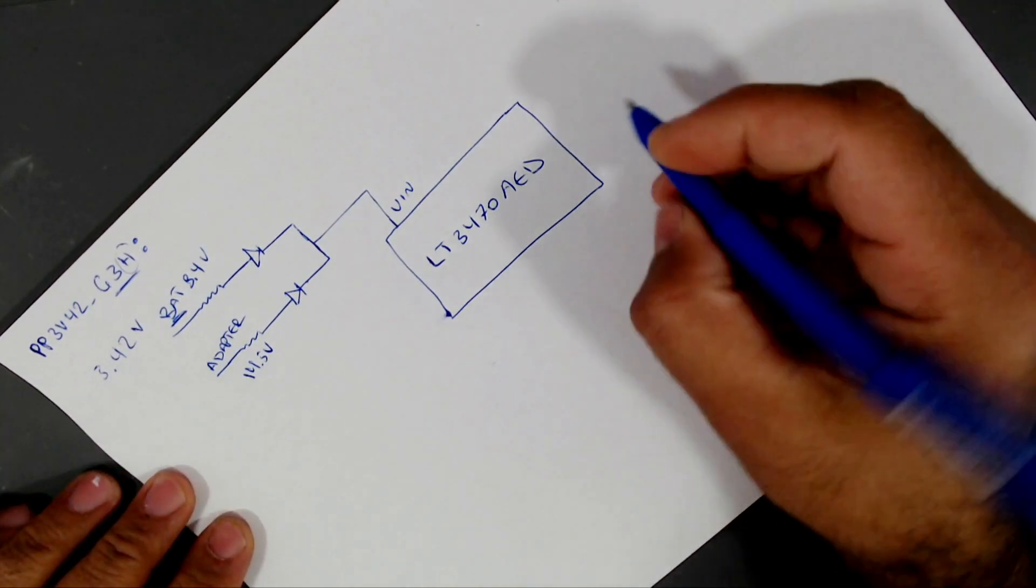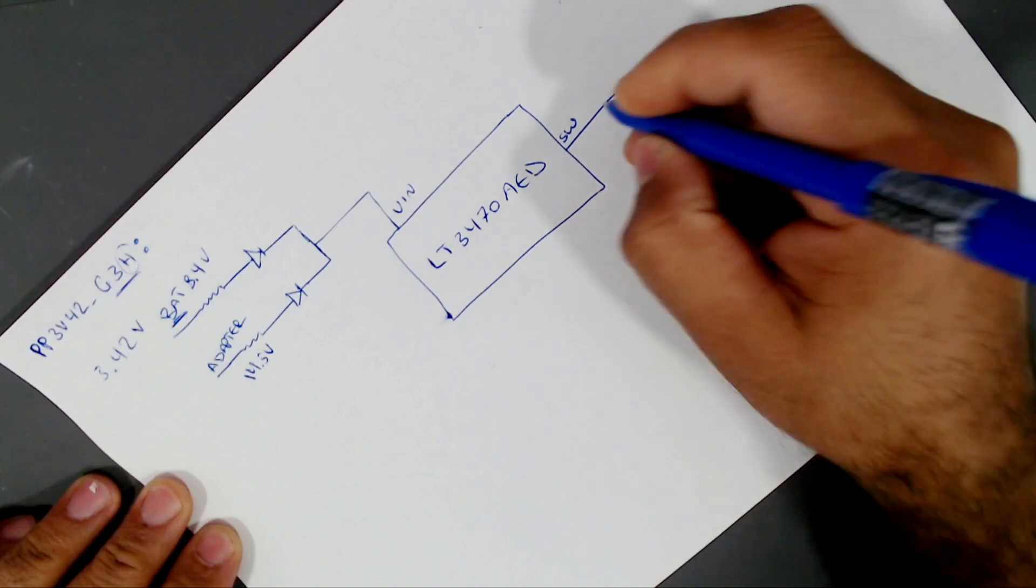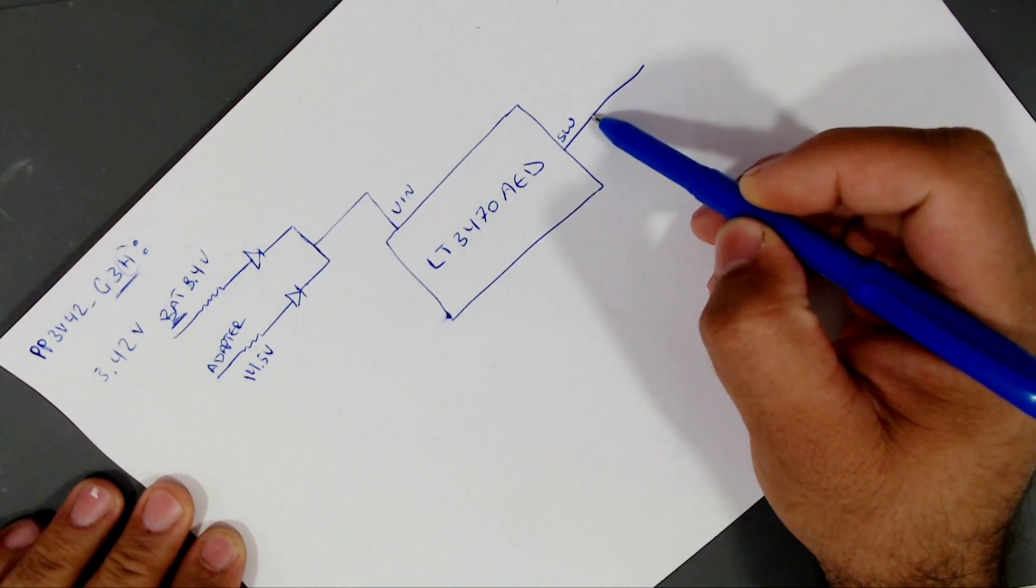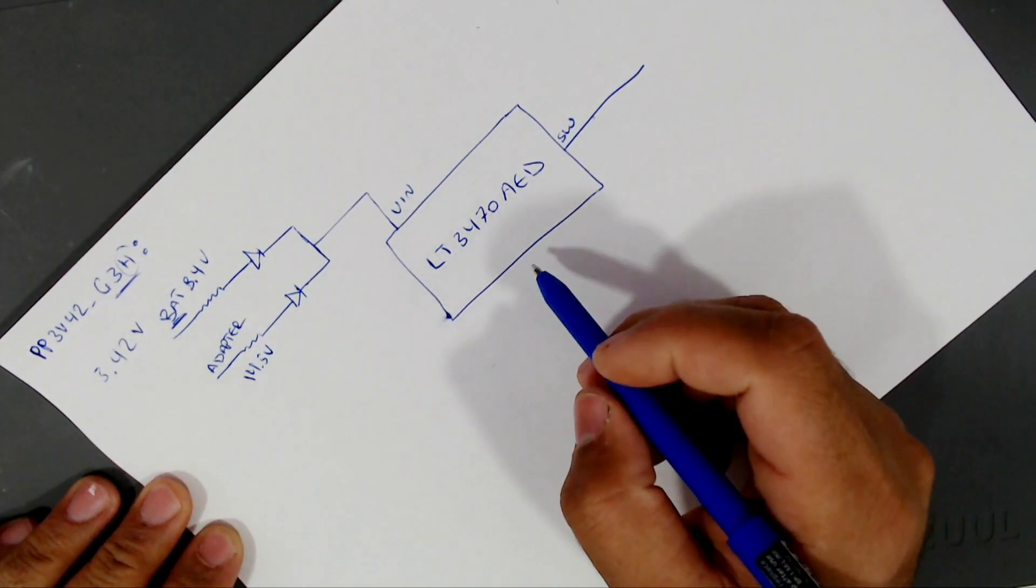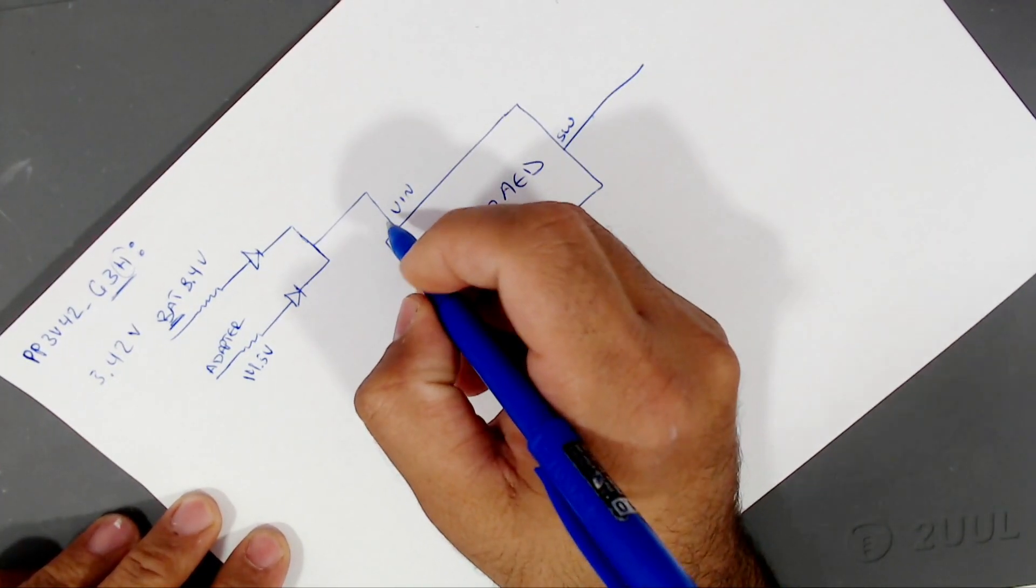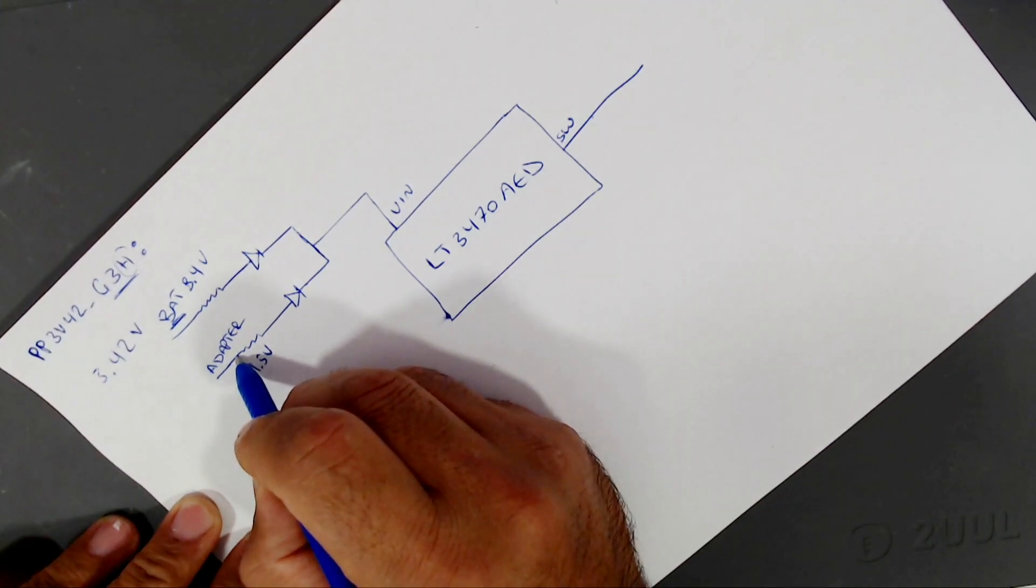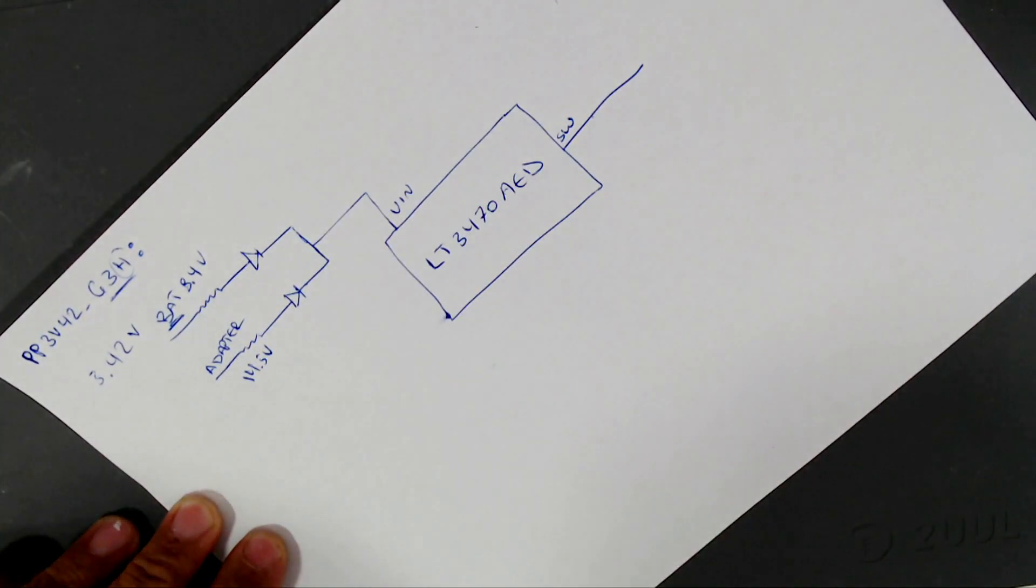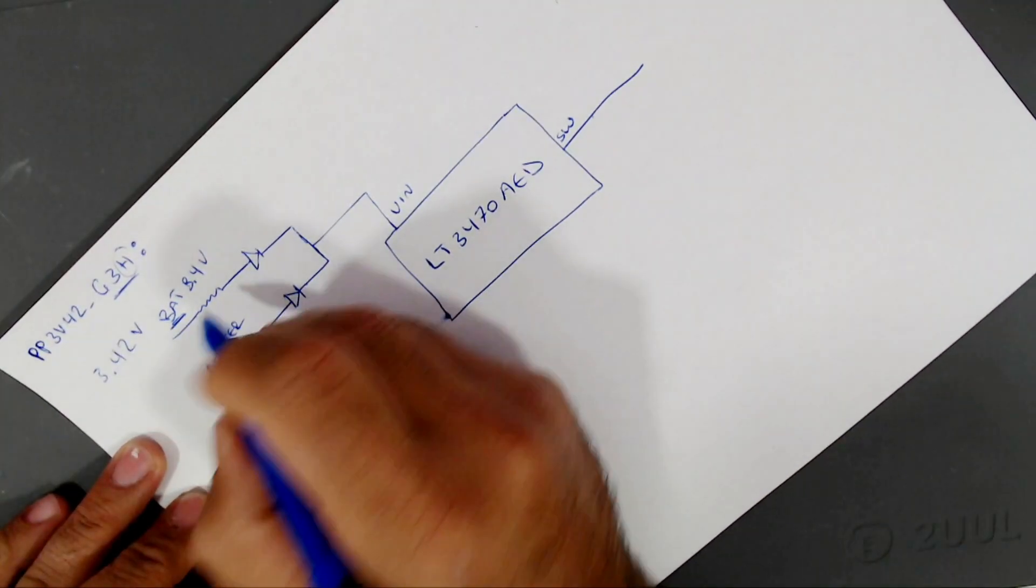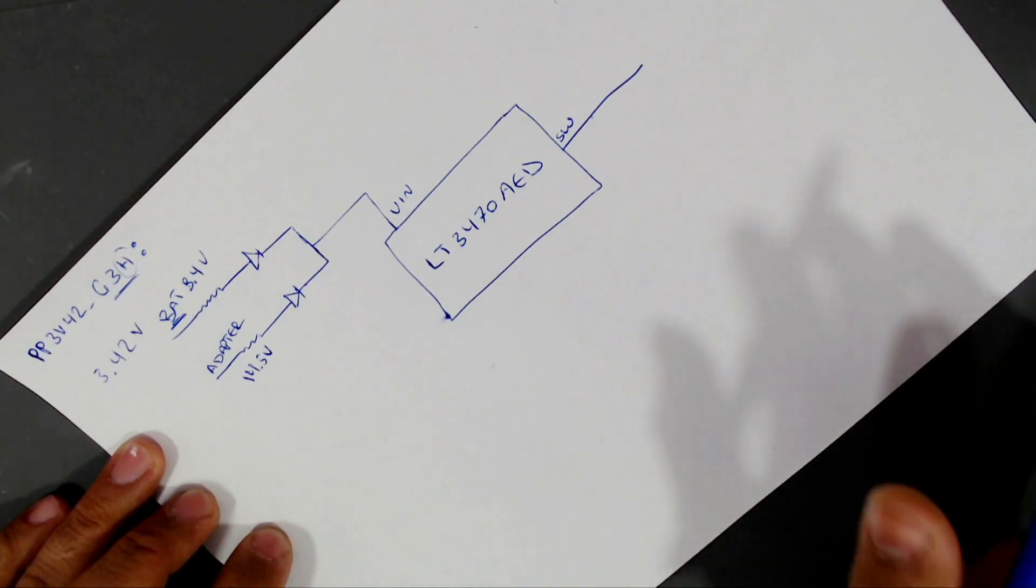So if you are missing the 3.42V voltage, this pin is called switched and the output is coming from this pin. If you are missing the 3.42V volts at the switch pin of this regulator, then you must check the VIN pin first. Do you have voltage here? If not, then go back and check before these two resistors. If you have the adapter connected, you must have voltage before and after this resistor. If you have voltage before but not after the resistor, then you know that this resistor is open circuit, it's blown, then you need to replace it.